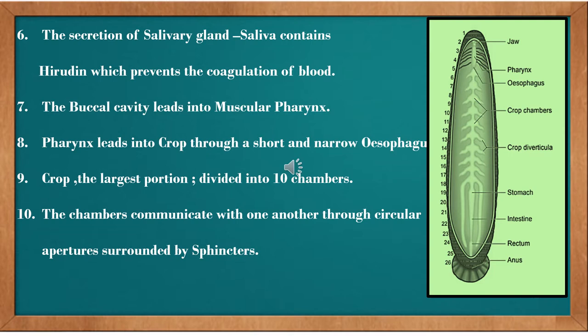Leech is an ectoparasite. It feeds on other living organisms such as humans, cattle, frogs, and fishes. The food it takes from those living organisms is their blood — it sucks blood. Blood-sucking animals are called sanguivorous.